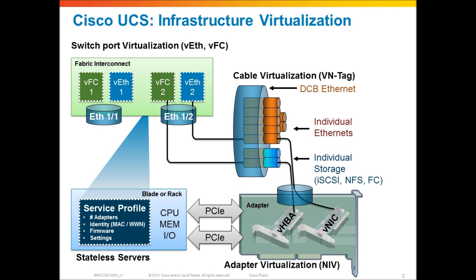At the Fabric Interconnect level — this is the switch of the system — you have physical interfaces, but those physical interfaces are really just providing infrastructure and physical connectivity for what are really logical virtual interfaces on the Fabric Interconnect: virtual fiber channel interfaces and virtual Ethernet interfaces. The actual connectivity to a server logically is provided through these virtual interfaces, and because they're virtual, they can be moved, dynamically changed, brought up and torn down quickly.